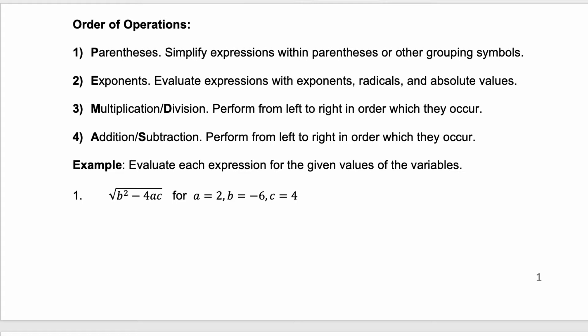In this example, we're given some values for our variables of a, b, and c. We're going to substitute those in, and then we're going to use our order of operations to simplify. So if we substitute those in, b squared would be negative six squared, and we're subtracting four times a, which is two, times c, which is four.